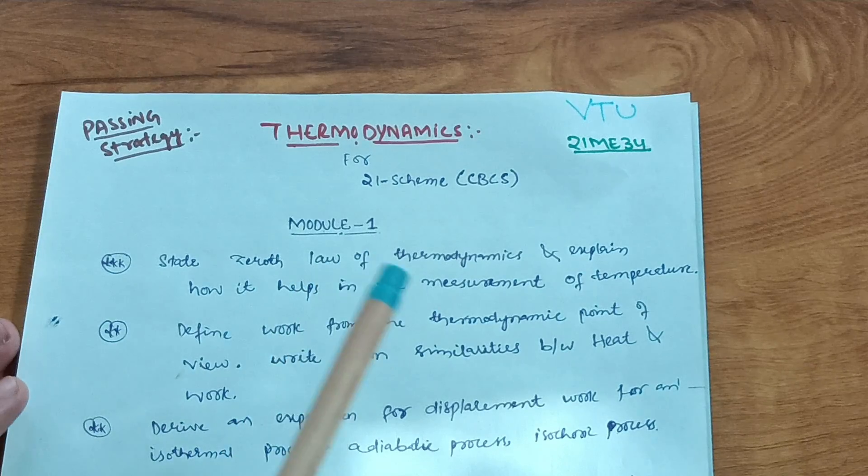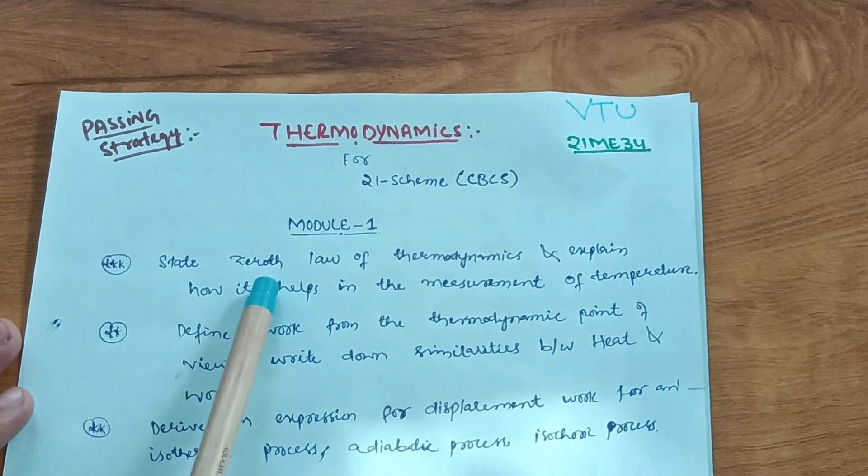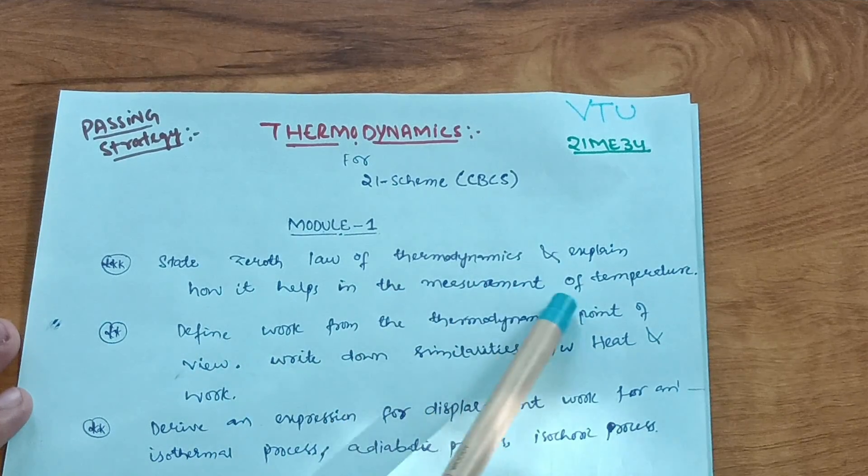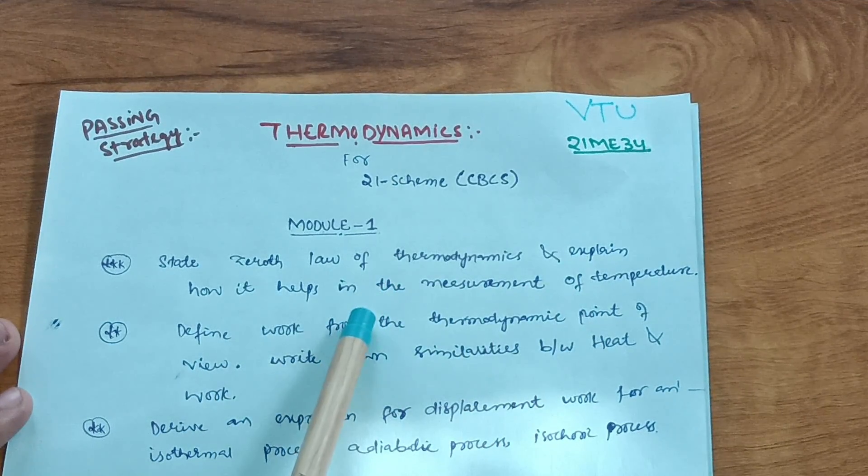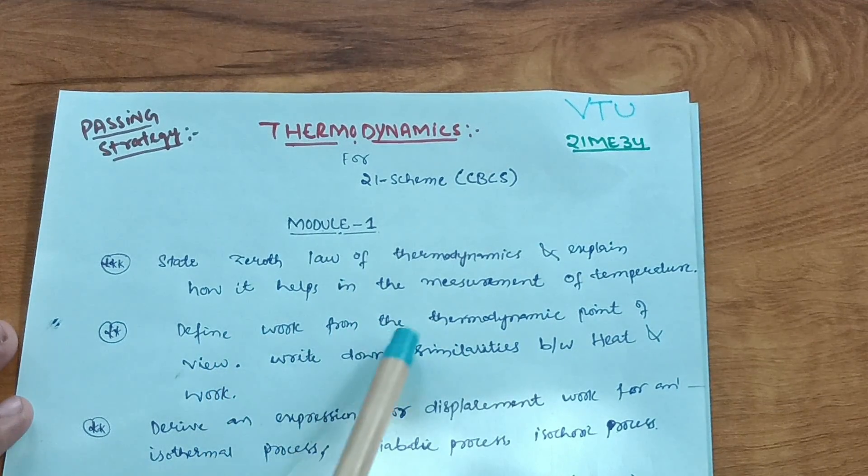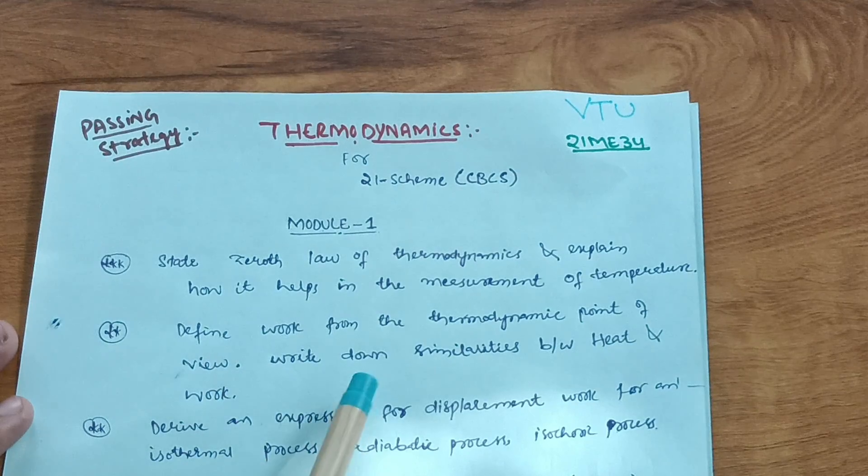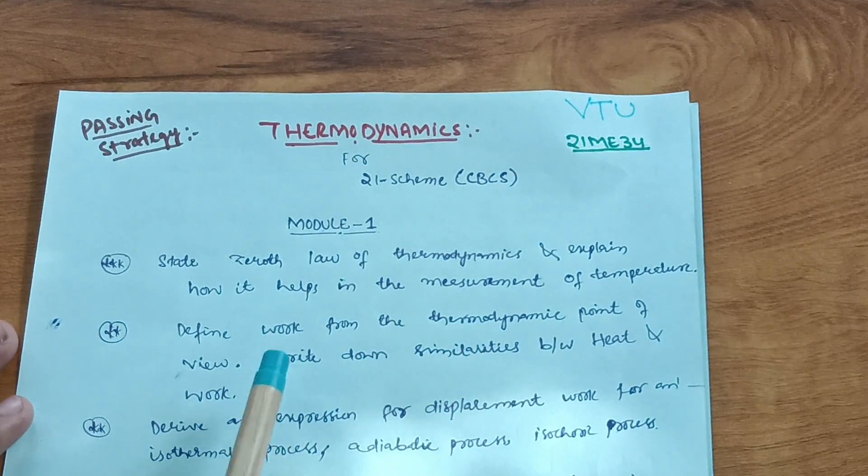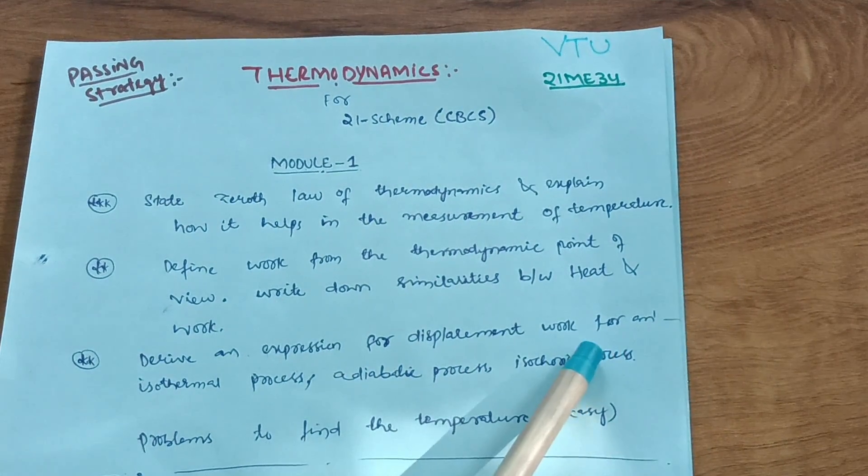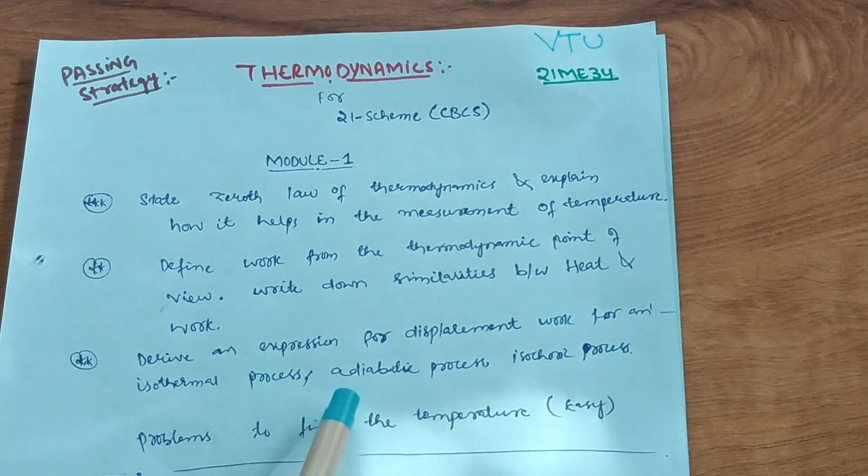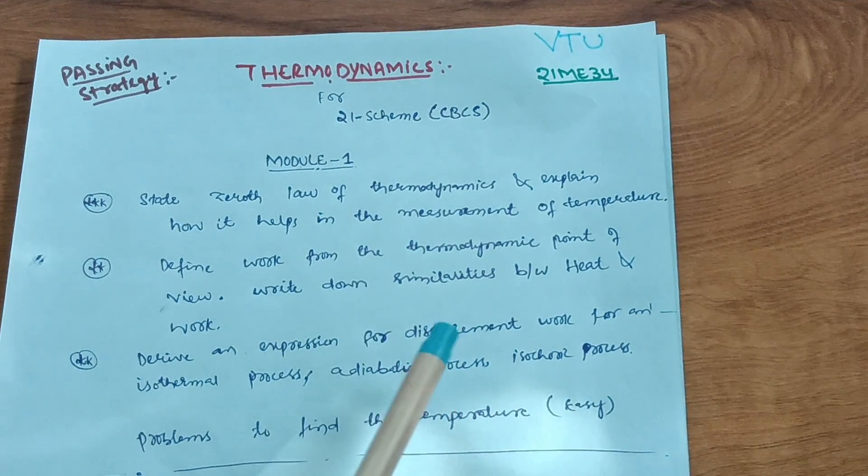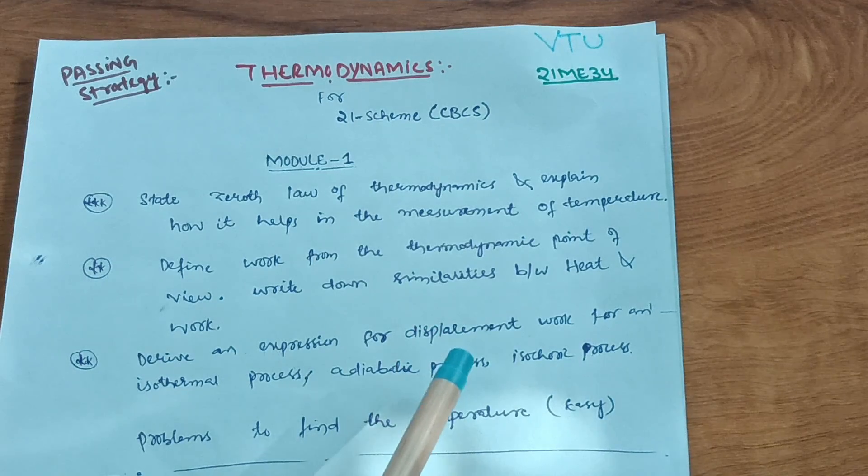In Module 1, you have to focus on theory. State zeroth law of thermodynamics and explain how it helps in the measurement of temperature - this is the most important question. Next one is define work from the thermodynamic point of view and write down the similarities between heat and work. Next is derive an expression for displacement work for an isothermal process. Sometimes they will give adiabatic process or isochoric process.